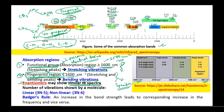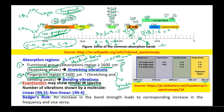How many vibrations can a molecule show? For a linear molecule, it is given by 3N − 5, where N is the number of atoms. For a triatomic linear molecule: 3×3 − 5 = 4 vibrations. If the ABA molecule is non-linear, then it is 3N − 6: 3×3 − 6 = 3 vibrations.